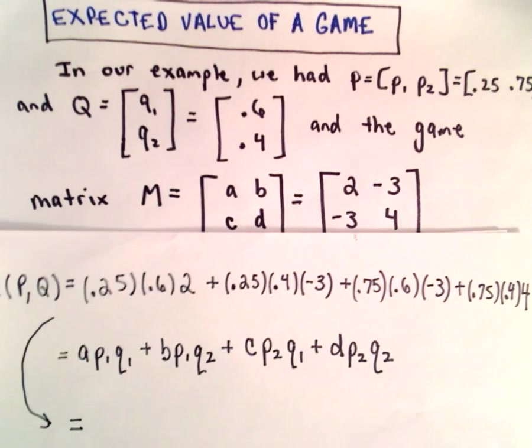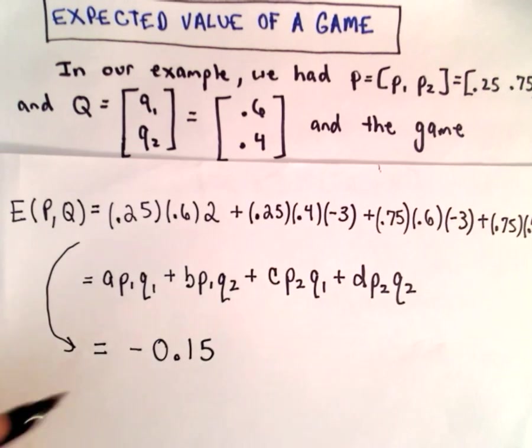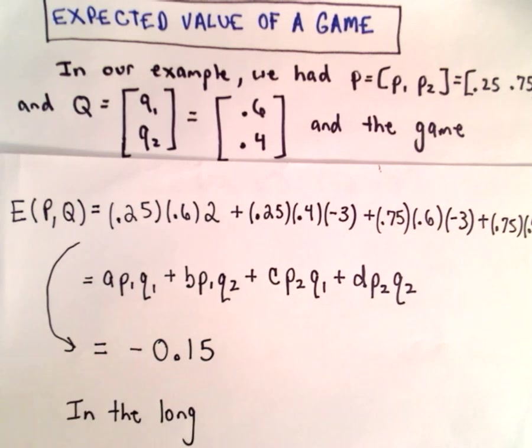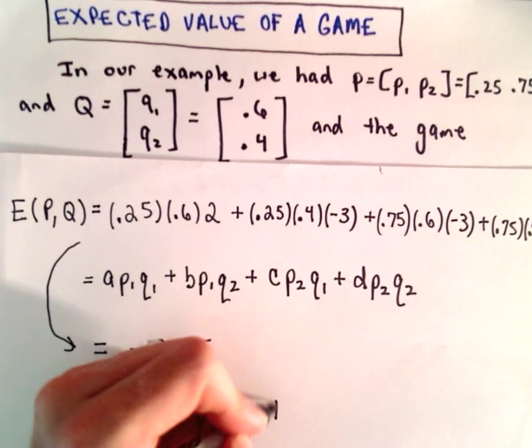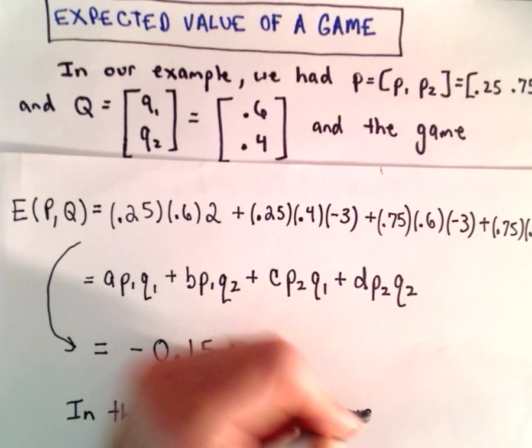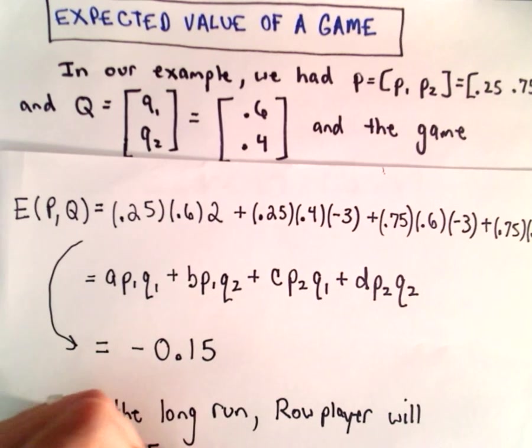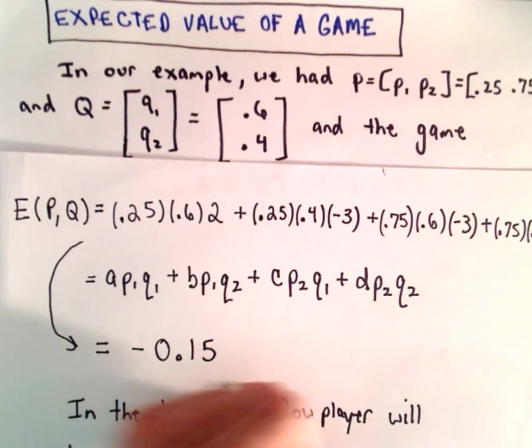You can check my arithmetic here. I'm not going to bore you with all the individual computations. But if we simplify this, we actually end up with negative 0.15. So what this tells us, it says in the long run, so if these players play this game a lot, in the long run, it says that the row player will lose 15 cents per game on average.